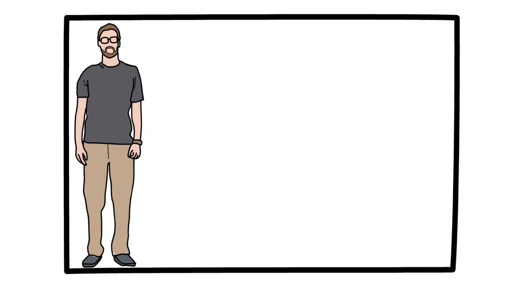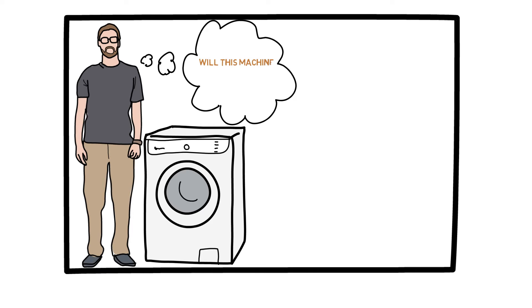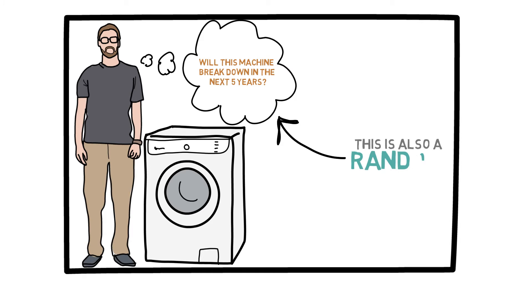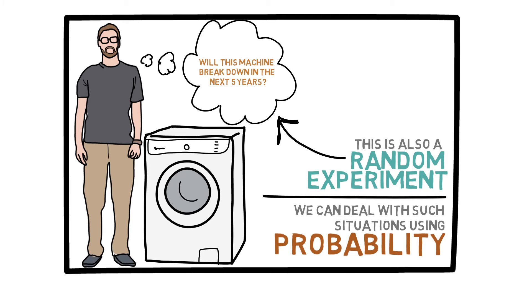Pretty much everything we do in real life can be considered in this way. Let's say you purchase a washing machine and you want to know if you should buy the extended warranty or not. What you are really asking yourself is, will your machine break down or not in the next five years? Because you are not sure about that — you don't know with certainty — that's a random experiment. We will talk about how to deal with such problems in this course. The main point right now is that pretty much everything in real life, due to the uncertainties and risks involved, can be potentially dealt with using probability.